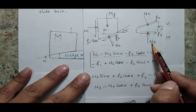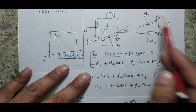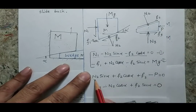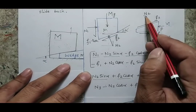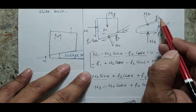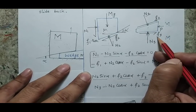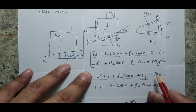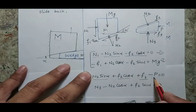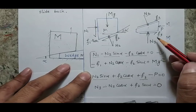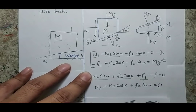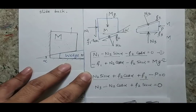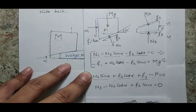For the wedge body, the forces include N3, F3, F2, N2, and the force P. The equation shows that N2 sin(alpha), F2 cos(alpha), and F3 all act in the rightward direction, while P acts in the opposite direction with a negative sign. Similarly, I write the vertical force balance equation. I suggest all students practice this problem because writing these equations quickly in an exam saves time and marks.